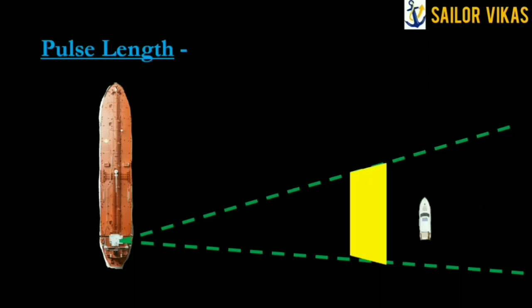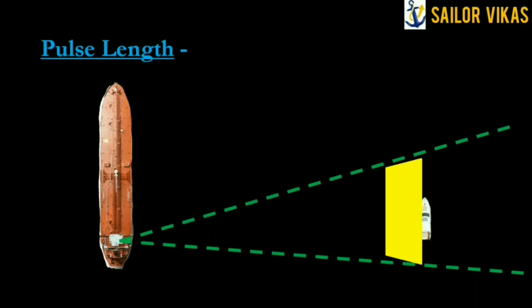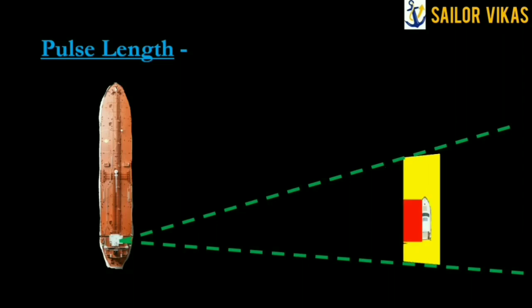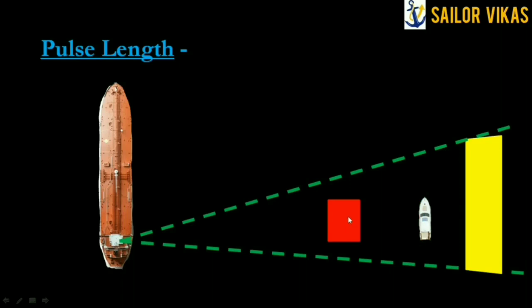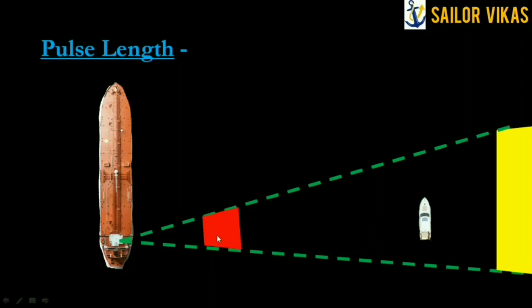To understand further, I will now introduce one target and we will see how the pulse length hits the target and how the echo gets received. As the leading edge hits the target, the echo starts getting generated, and this echo will keep on getting generated until the trailing edge hits and leaves the target. You can see the trailing edge is now leaving the target, and the red color echo is traveling back to the receiver while the pulse continues forward.